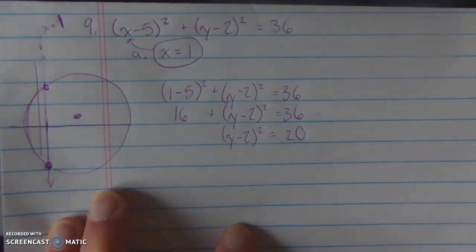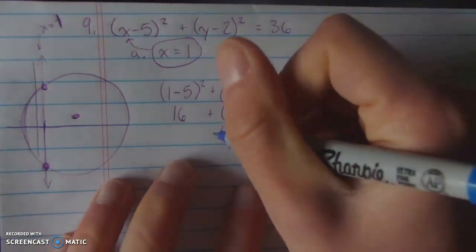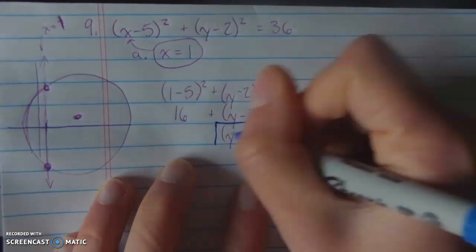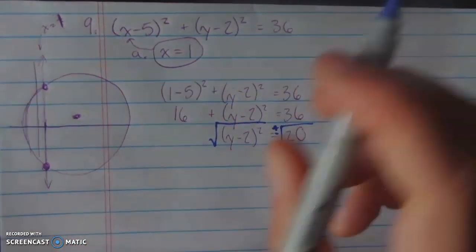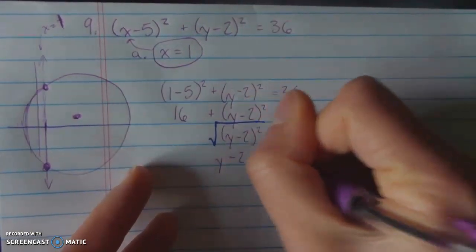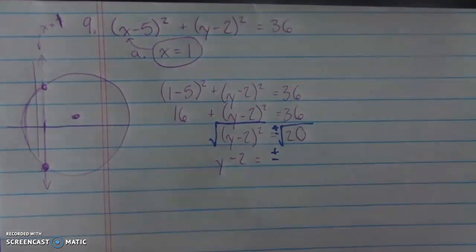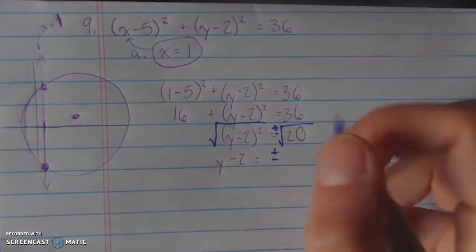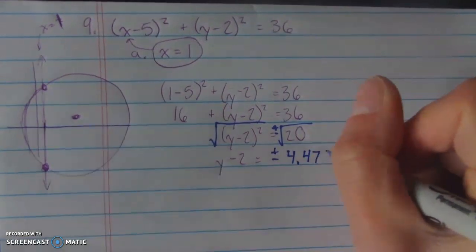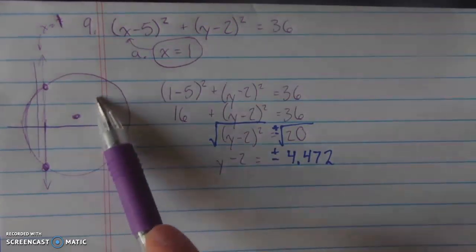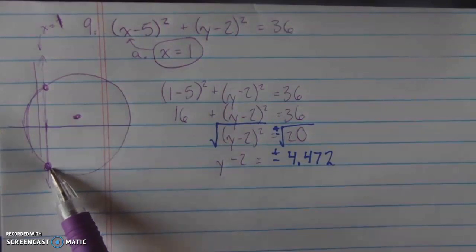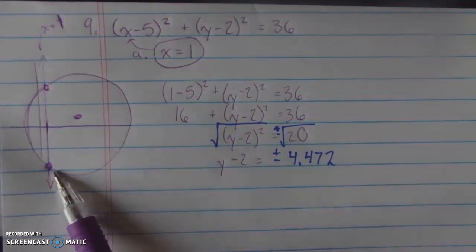And here, this is the part where things sometimes go wrong for people. What I need to do next is I need to get rid of this squared. And in order to do that, I need to take the square root of both sides. But when you take the square root of something, don't forget that there's always a positive and a negative answer. So what I'm left with is y minus 2 is equal to plus or minus the square root of 20.